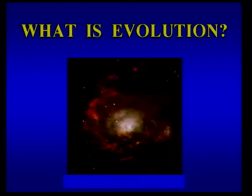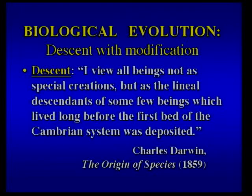I'm going to talk about evolution today, and one thing I have to do is define what I mean by that. It has many meanings. One of them, for example, is cosmic evolution — the history of the universe. I'm not going to talk about anything that broad. Instead, I'm going to specifically talk about biological evolution, which Charles Darwin himself defined as descent with modification.